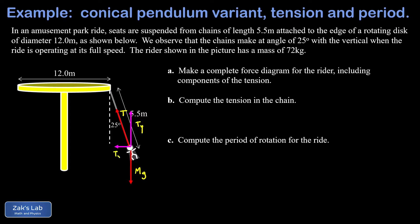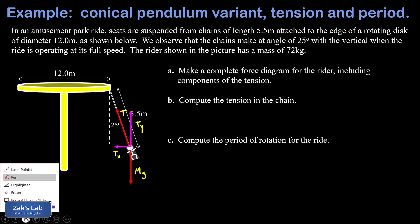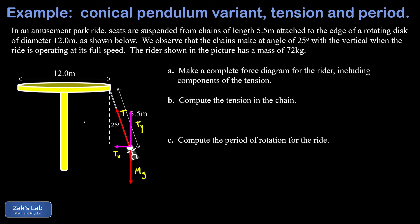I want to point out how this angle relates to the components of T. This is an angle of 25 degrees right here, but that's an alternate interior angle with this, so this is also 25 degrees. That means Ty is actually given by a cosine: T times the cosine of 25 degrees. And Tx is given by T sine of 25 degrees.